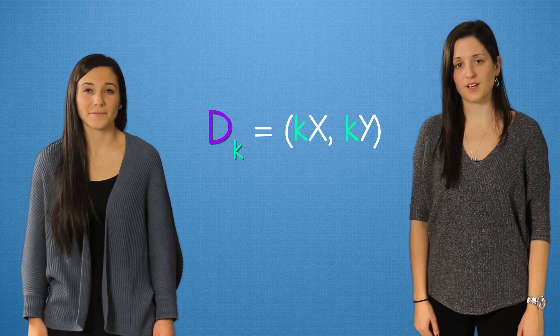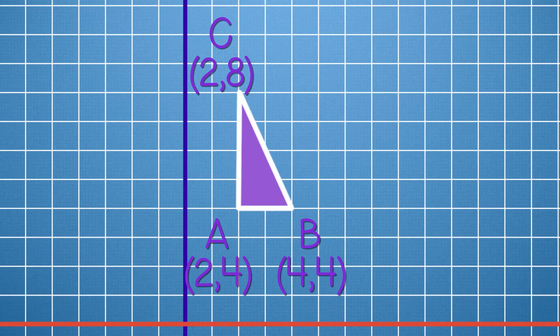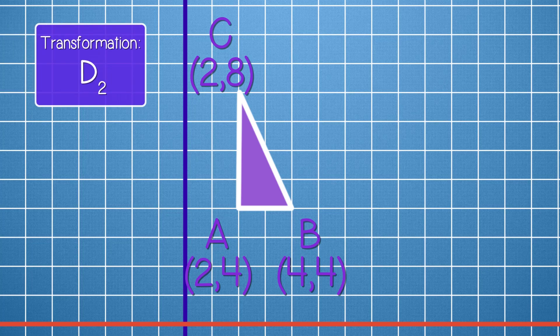Let's take a look at a few examples. Here's our shape, a triangle ABC. If our scale factor is 2, what does our new shape look like? Let's do the math.